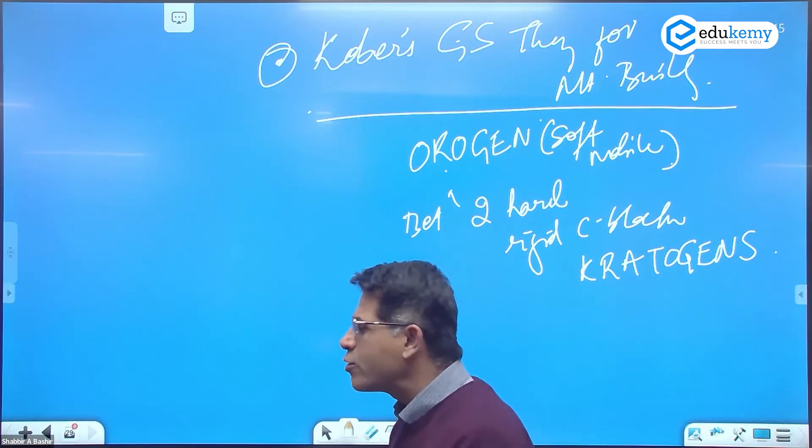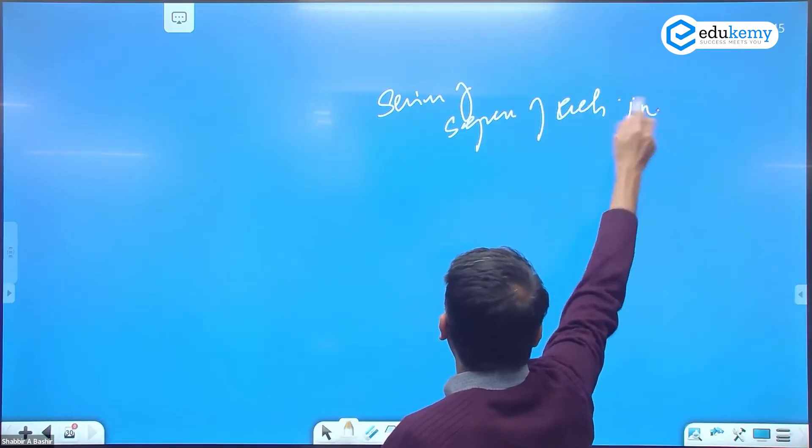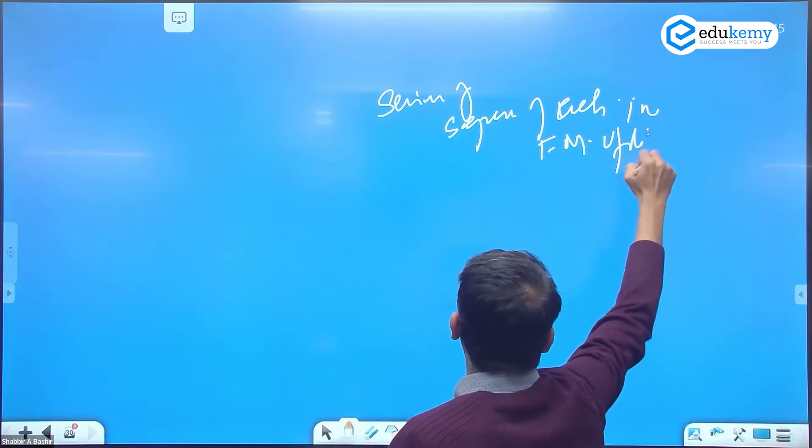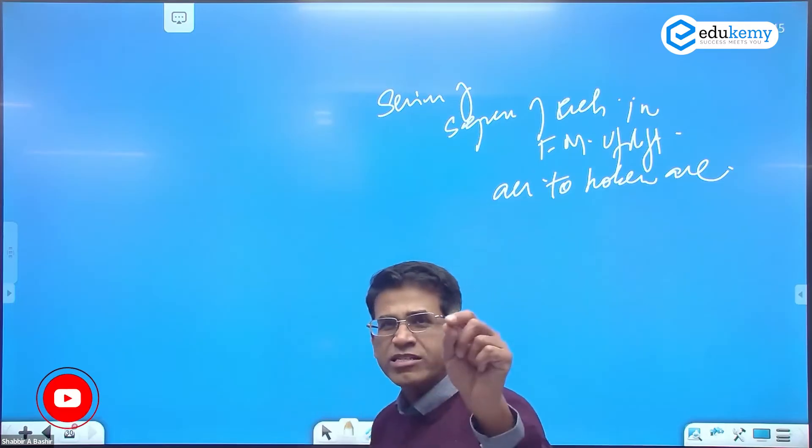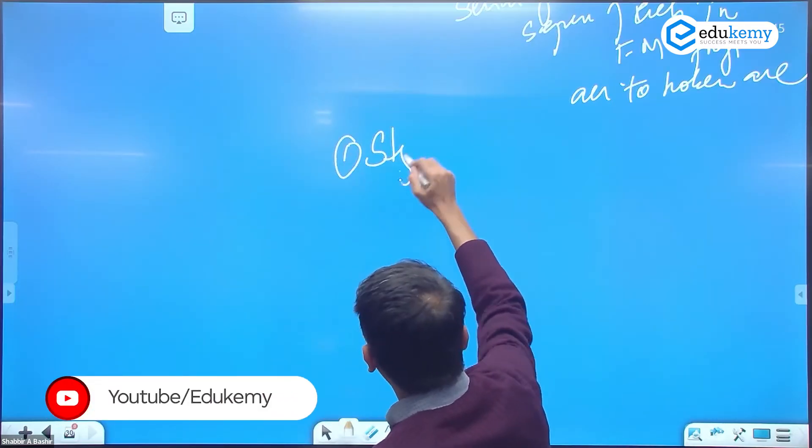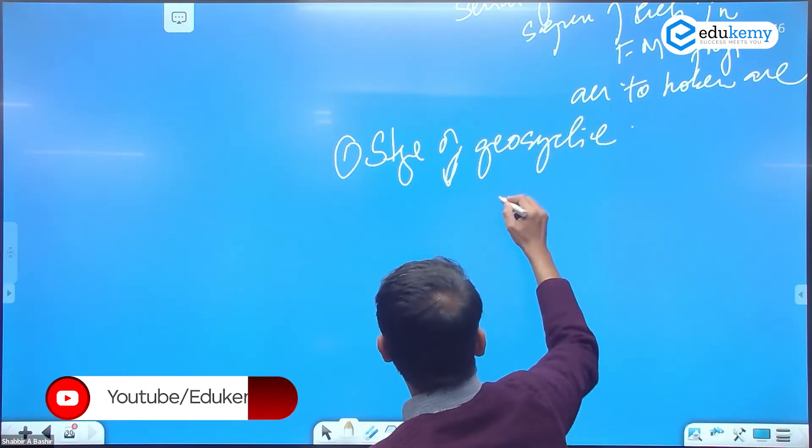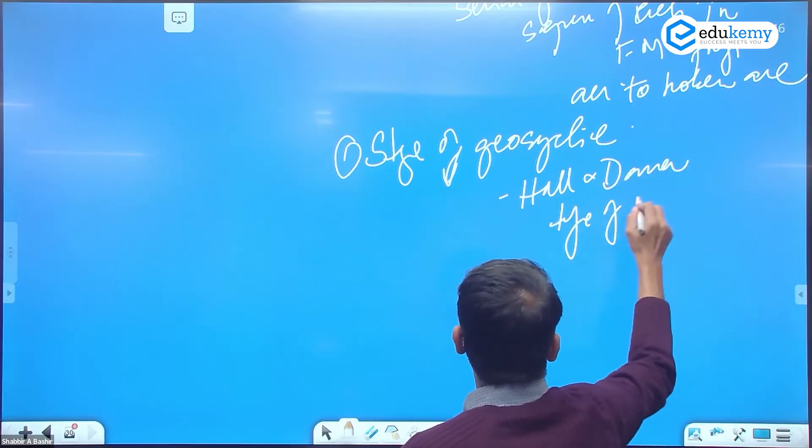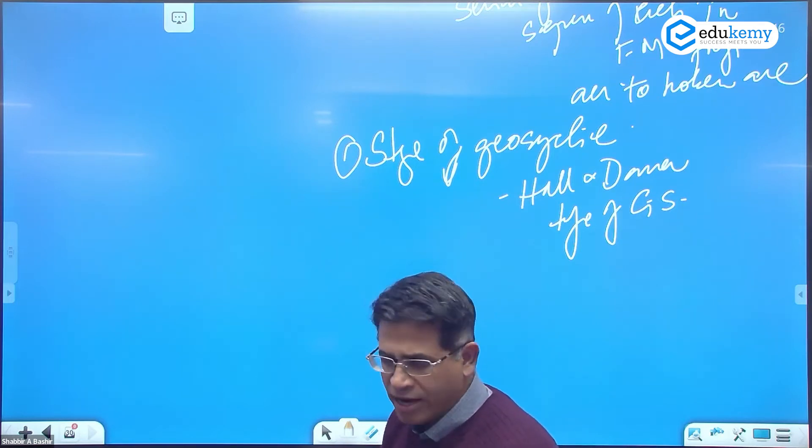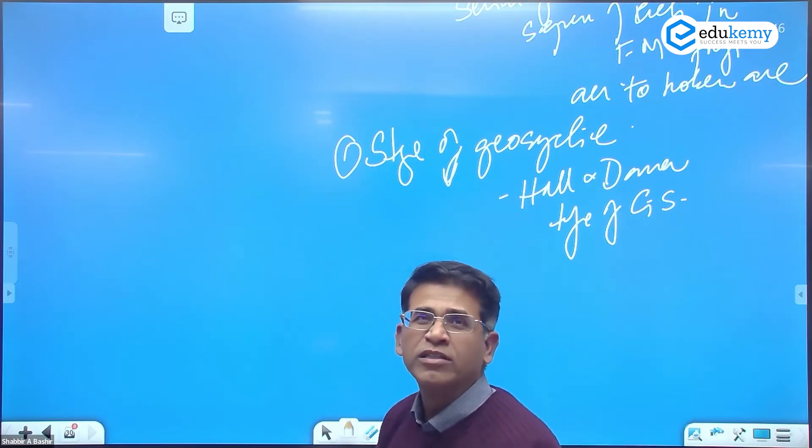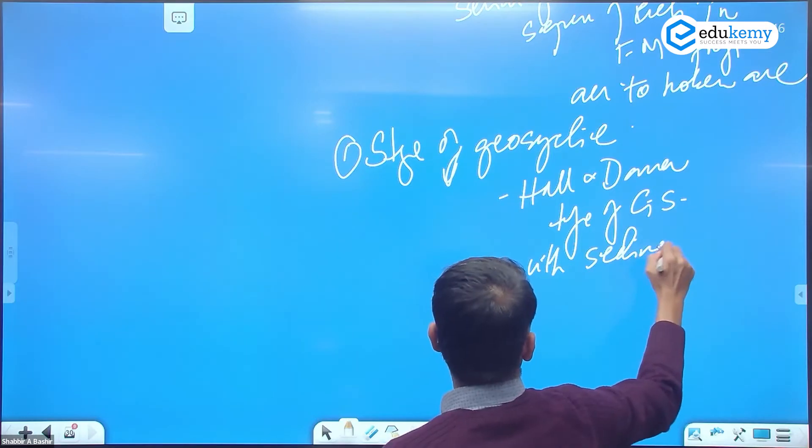The series of sequence of events in the fold mountain upliftment according to Cober. Number one is the stage of geosyncline. This is hall and dana type of geosyncline, a geosyncline with sinking floor, with sedimentation.